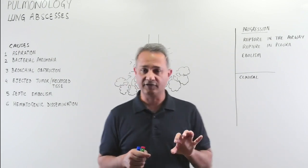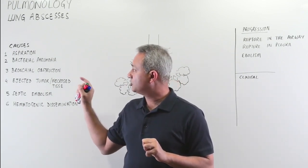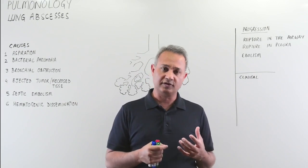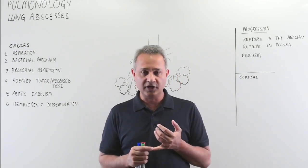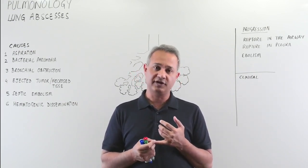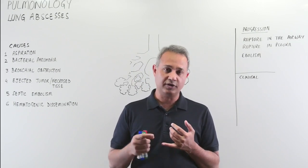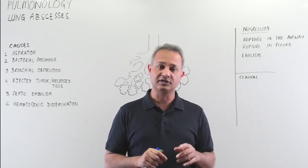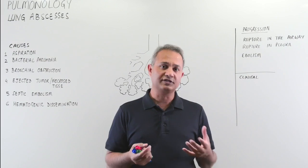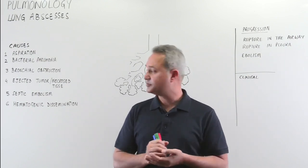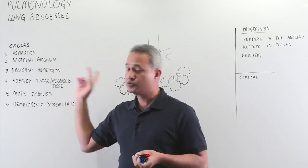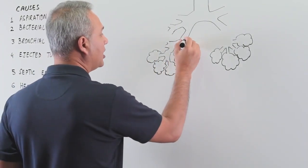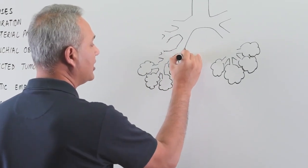Bacterial pneumonia is another cause of lung abscesses. Staphylococcus aureus is more dangerous compared to Streptococcus pneumoniae, and Mycobacterium tuberculosis is also a significant cause. Fungi of various kinds can also cause abscesses.